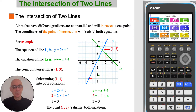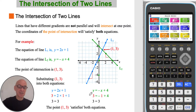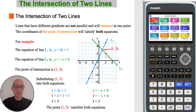Substituting 1 comma 3 into the first equation gives 3 equals 2 times 1 plus 1, which is equal to 3. And substituting it into the second equation gives 3 equals negative 1 plus 4, which is also equal to 3. So the point 1 comma 3 satisfies or fulfills both equations.